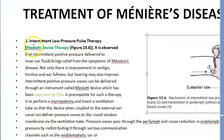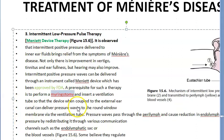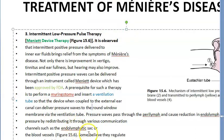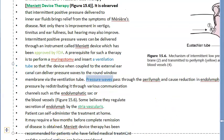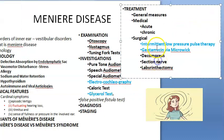This compression redistributes endolymph pressure to the endolymphatic sac, from where it gets drained. This procedure is called the Meniett device therapy. A myringotomy — a hole in the tympanic membrane — is required to insert the ventilation tube, which is why it sits between medical and surgical treatment.